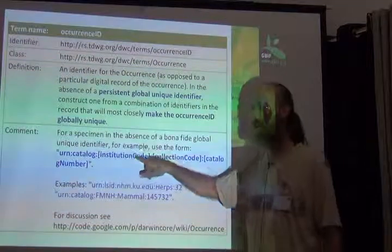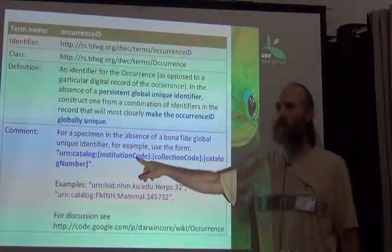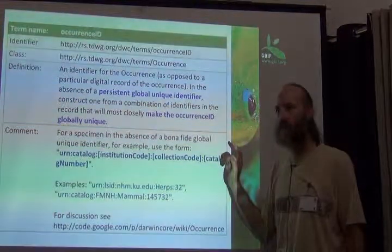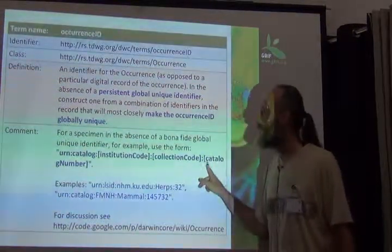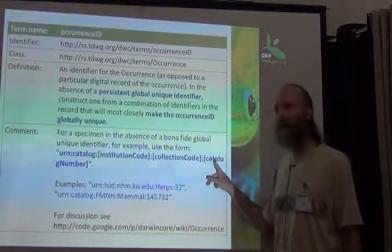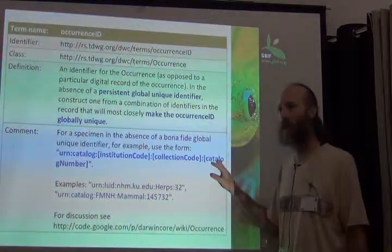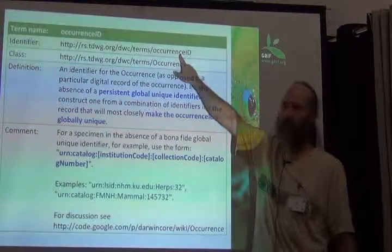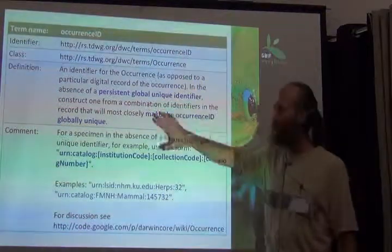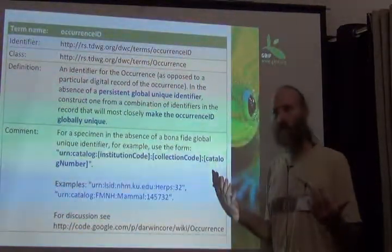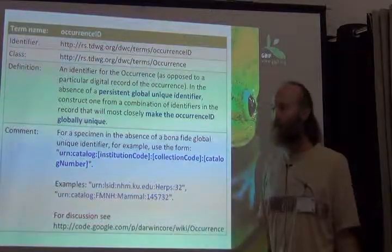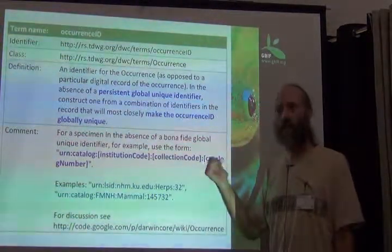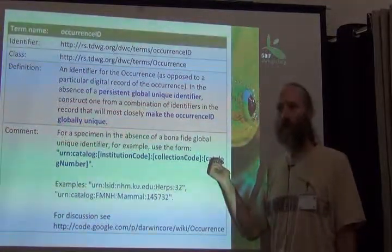This part — we know what an institution code is, because Darwin Core tells us. We know what a collection code is and what a catalog number is. So as long as collections are cataloging without duplicate catalog numbers, this should uniquely identify an occurrence. This is a way for us, not knowing anything about global unique identifiers yet, to construct one that should be useful throughout the world.